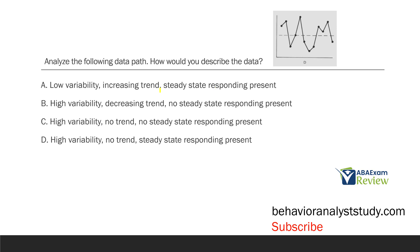Answer B says high variability, yes, but decreasing trend — we don't have a trend. Answer C and D both say high variability, yes. D says no trend, yes, and no steady state responding present, yes. By doing all our work up front, we can quickly jump to the answer choices and easily answer the question because we've already predicted the answer. There's high variability, there's no trend, and there's no steady state responding. The difference between C and D is that D correctly states no steady state responding. So the answer is high variability, no trend, and no steady state responding present.